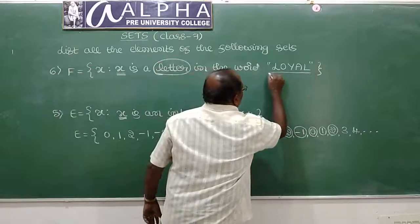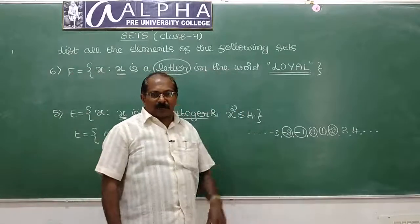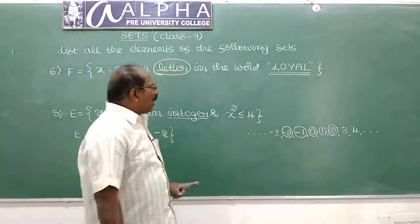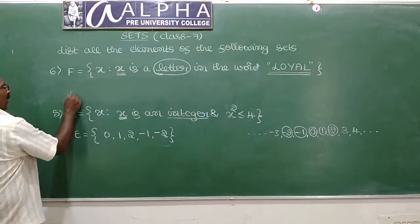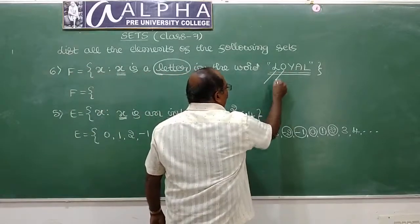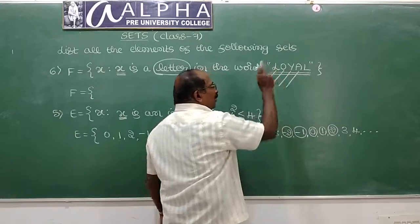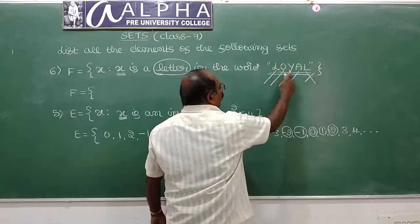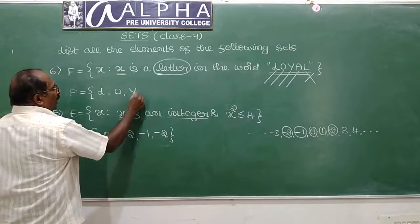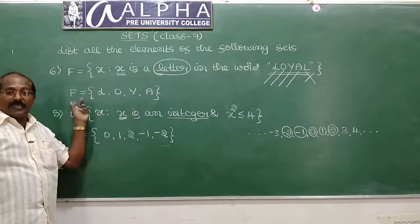Every element of set F is a letter in the word LOYAL. You know there are 26 letters in the English alphabet, but only the letters appearing in LOYAL are elements. So L, O, Y, A are the elements of the set. This is also a finite, countable set because there are four elements in set F.